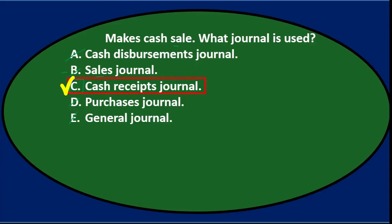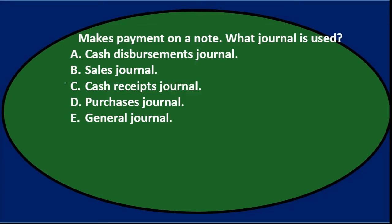That's a key one to remember. Makes cash sale — what journal is used? C. Cash receipts journal.